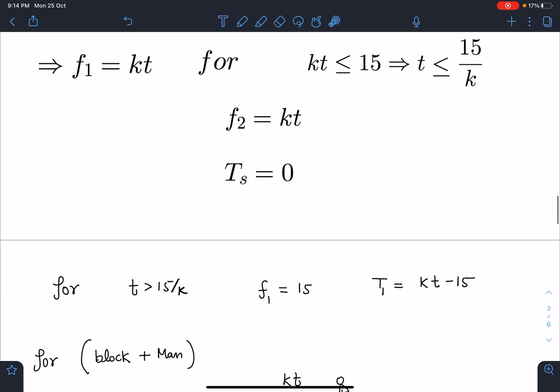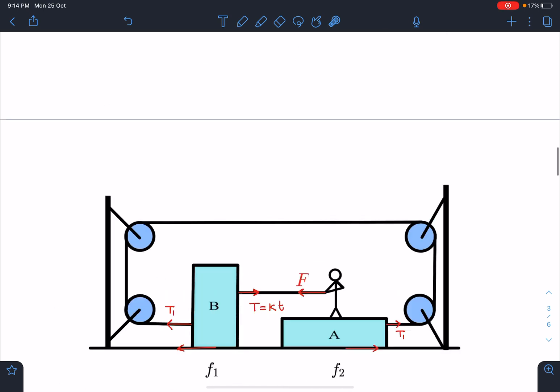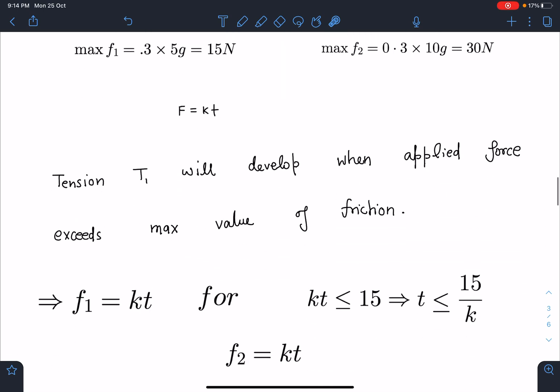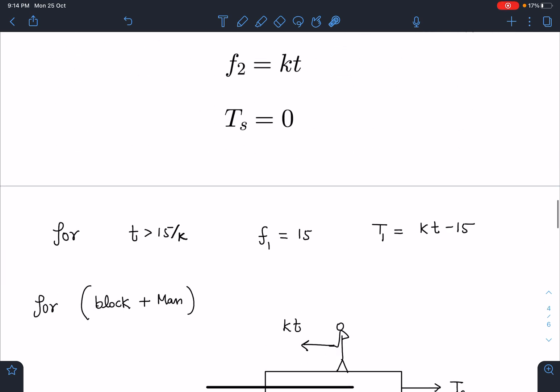So at this moment, this friction has reached a maximum value. This has reached the maximum value and difference of these two will give us the tension T. So tension T in the outer string will be kt minus 15. Whatever extra force is there, it will pass to the string attached.